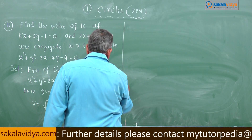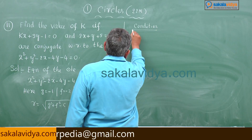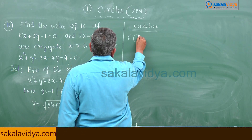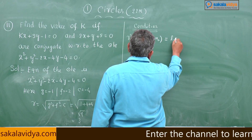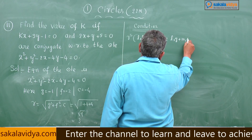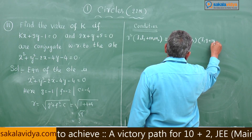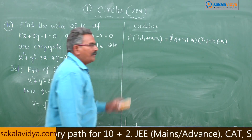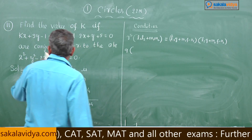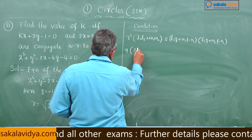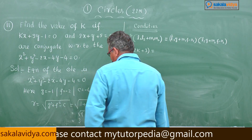Applying the condition for conjugate lines: r²(l1·l2 + m1·m2) = (l1·g + m1·f - n1)(l2·g + m2·f - n2). So: 9(k·2 + 3·1) = (k·(-1) + 3·(-2) - (-1))(2·(-1) + 1·(-2) - 5), which is 9(2k + 3) = (-k - 6 + 1)(-2 - 2 - 5).